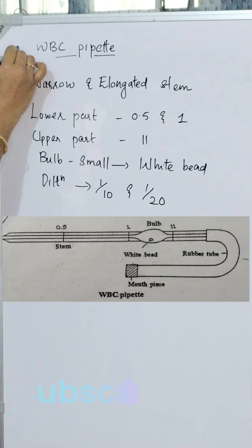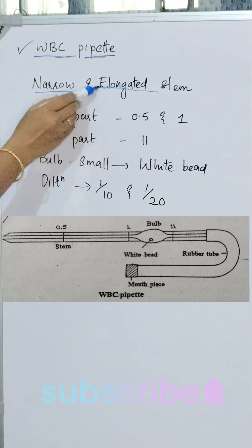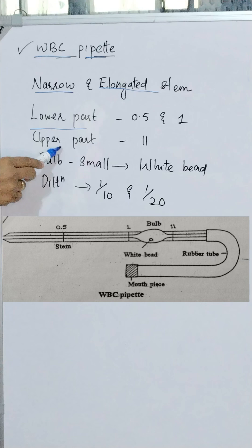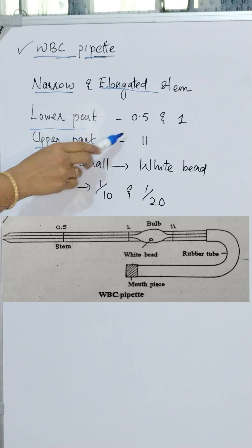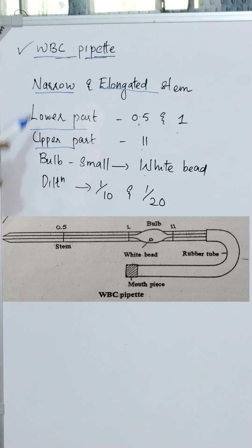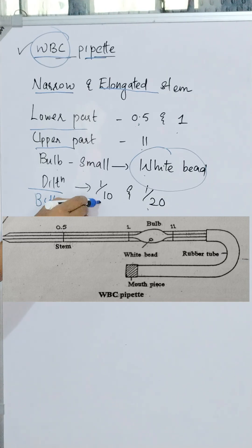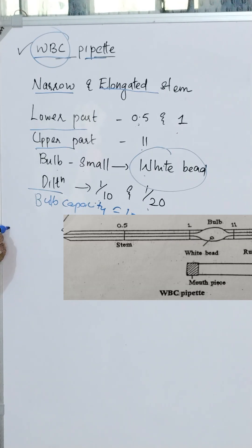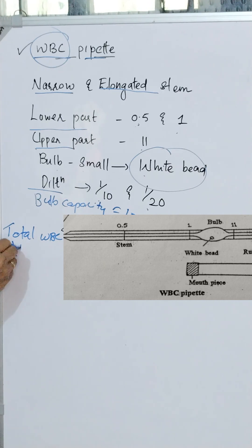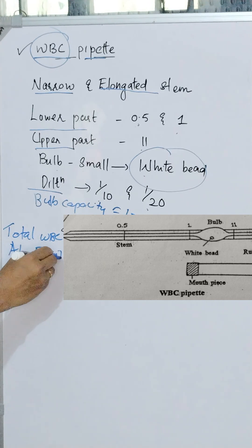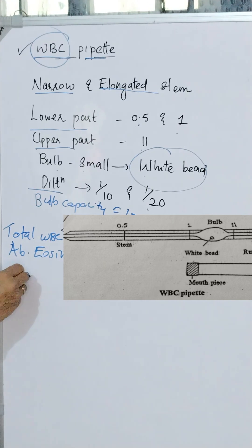The WBC pipette has a long and narrow stem. The lower part has two markings: 0.5 and 1, same as the RBC pipette. But the upper part has the marking 11. The bulb of the WBC pipette carries a white bead and the capacity of the bulb is 10. The dilutions that can be made are 1 in 10 and 1 in 20. The WBC pipette can be used for total WBC count, absolute eosinophil count, and sperm count.